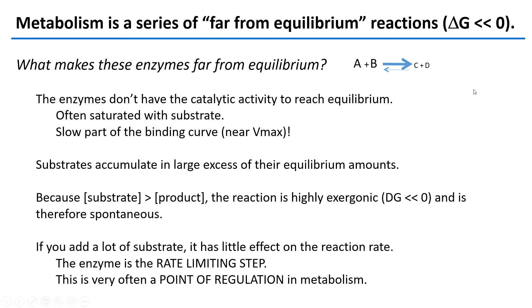So this means if they're often saturated with substrate, they're near Vmax for their reaction rates — always functioning at Vmax, always saturated with substrate, and always moving from substrate to product. Because substrate concentration is always higher than product concentration, these reactions are very exergonic and therefore spontaneous. They also require enzymes to speed up the rate, but the reactions themselves will proceed spontaneously and are thermodynamically favorable. In glycolysis, there are three far from equilibrium reactions where three enzymes are almost always saturated with substrate — these are referred to as rate limiting steps and represent points of regulation in the pathway.